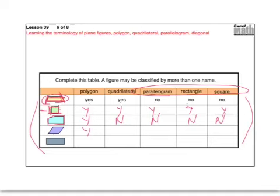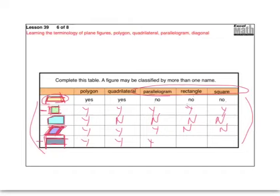The next shape: is it a polygon? Yes. Is it a quadrilateral? Yes, four sides. Is it a parallelogram? Yes, those two sides are parallel and those two sides are parallel. Is it a rectangle? No — we don't have four right angles. Is it a square? No. Last shape: is it a polygon? Yes. Quadrilateral? Yes, four sides. Parallelogram? Yes. Rectangle? Yes, it has four right angles — rectangle, right angle, that's how you remember it. Square? No, because a square must have four congruent sides.